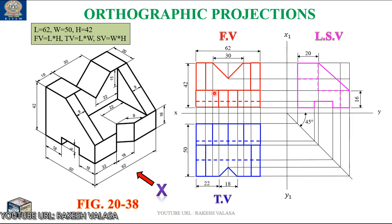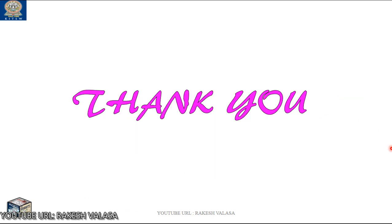This is the final solution for the given problem — draw the three views, that means front view, top view, and side view, for the given pictorial or isometric figure. I hope this problem is very clear. Thank you for watching. Please do like and subscribe to my channel for more updates, and also share with your friends.